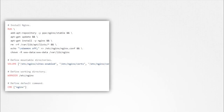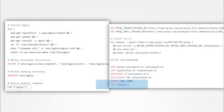So who defines what process is run within the container? If you look at the Dockerfile for popular Docker images like nginx, you will see an instruction called CMD, which stands for command, that defines the program that will be run within the container when it starts. For the nginx image, it is the nginx command. For the MySQL image, it is the mysqld command.